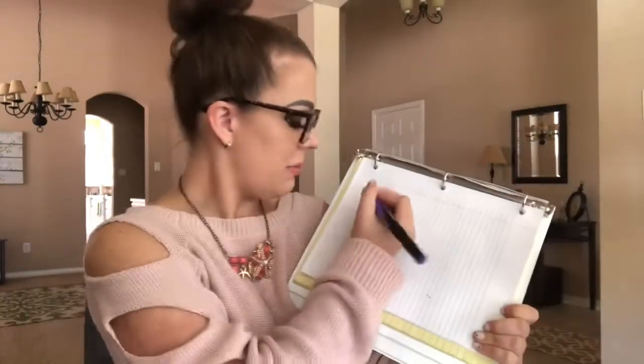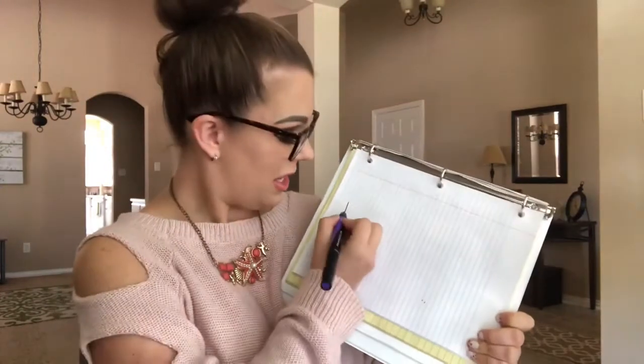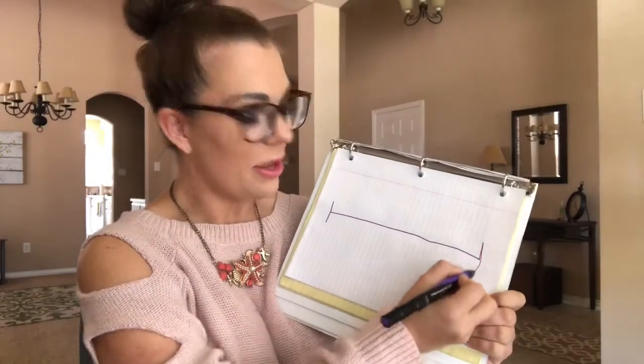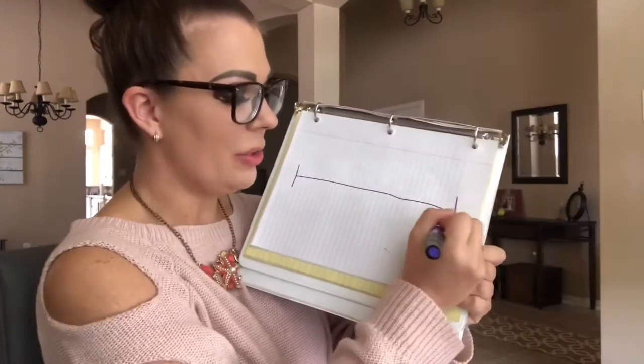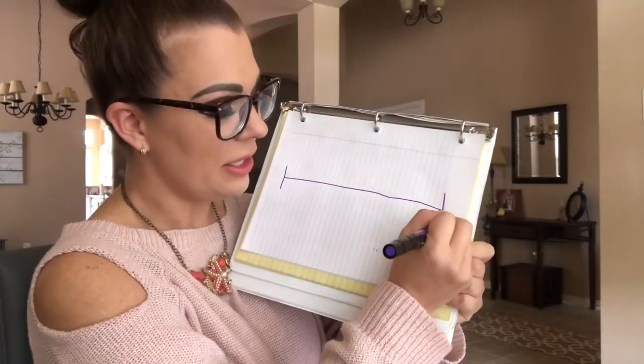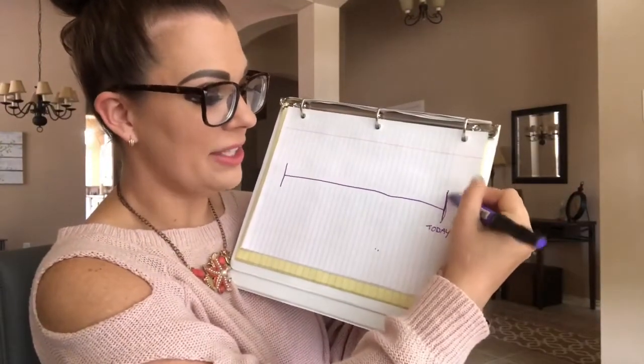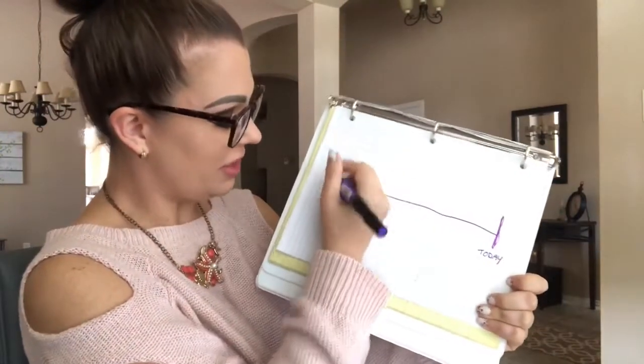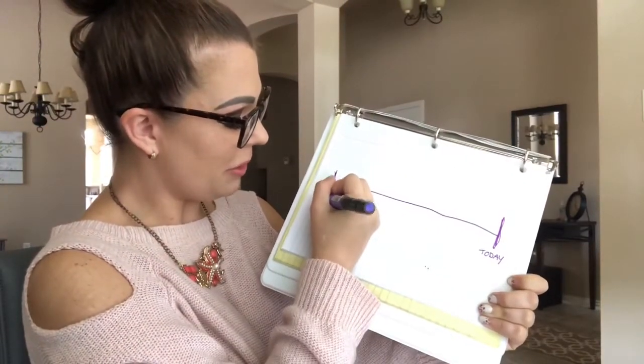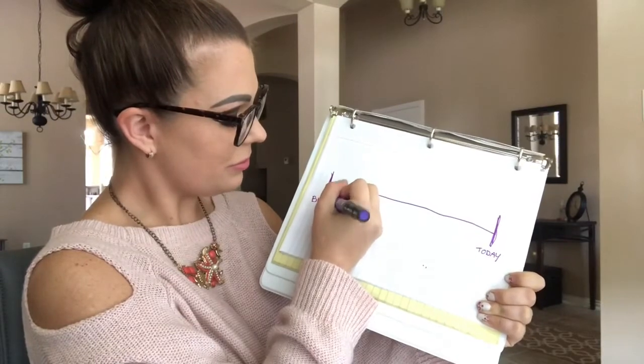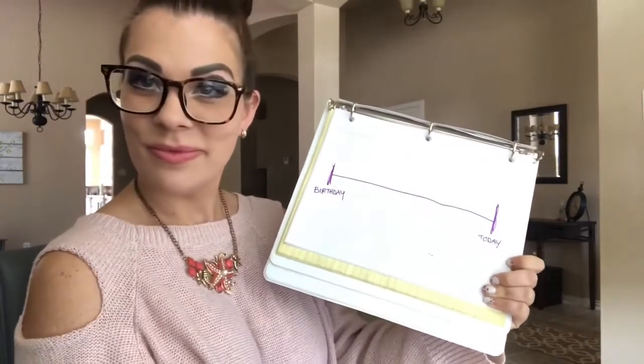Have you seen a timeline before? Maybe in a history book, or maybe you saw one and didn't even know what it was. A timeline looks something like this — a little bit like a number line. We can label one vertical line 'today' and another vertical line 'the day I was born.'